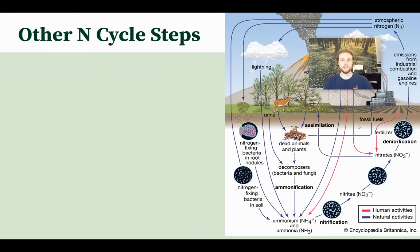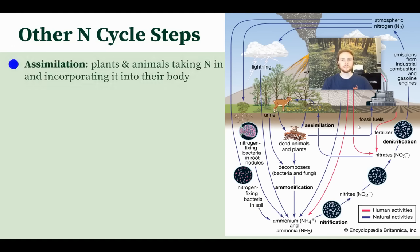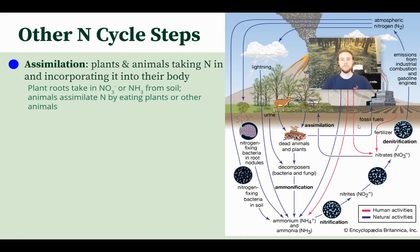While nitrogen fixation is a critical step, there are other steps in the nitrogen cycle. The first is assimilation — the process of plants and animals taking nitrogen in and incorporating it into their bodies. They need nitrogen for DNA in their cells and to build proteins. Plants access nitrogen directly by having their roots take in nitrates or ammonia from the soil. Animals, though, have to eat plants to get their nitrogen, or if carnivorous, eat animals that have eaten plants. Plants are the key assimilators of nitrogen. In the diagram, the blue circles show nitrogen moving from soil into plant roots, and then animals eat the plants.